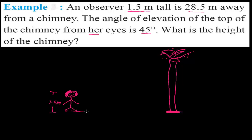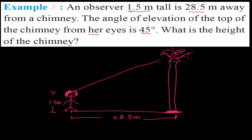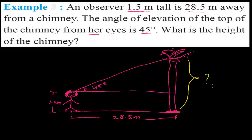This girl is about 28.5 meters away from the base of this chimney. When she looks at the top of the chimney, she makes an angle of 45 degrees. Now what is the height of the chimney? We have to find out the height of this chimney.